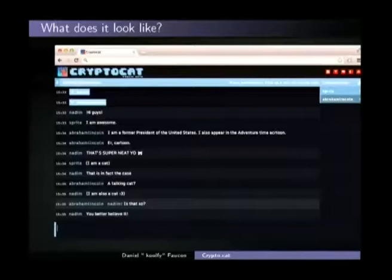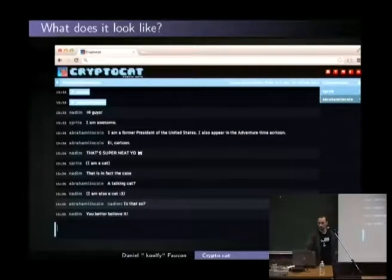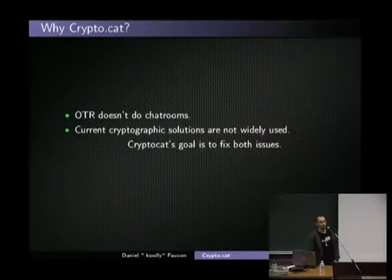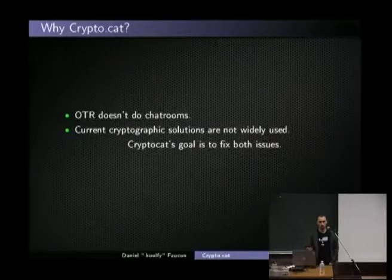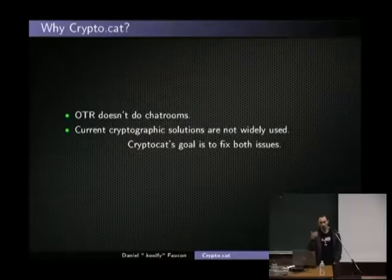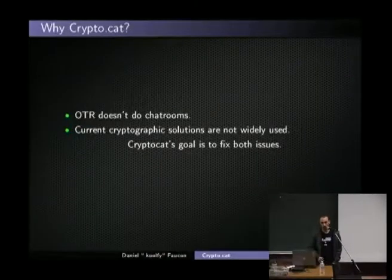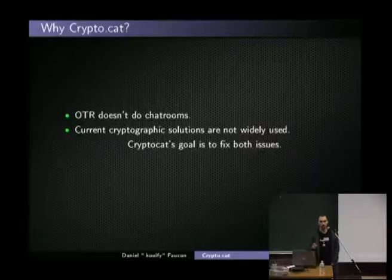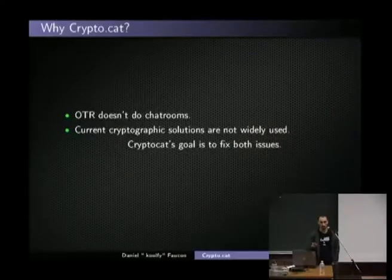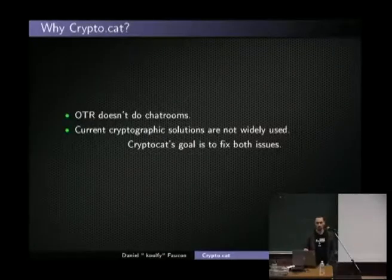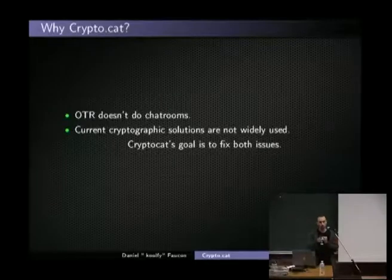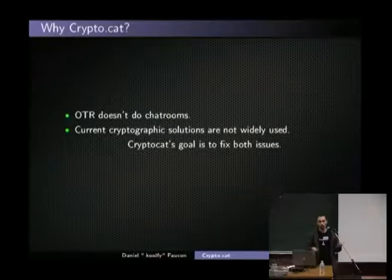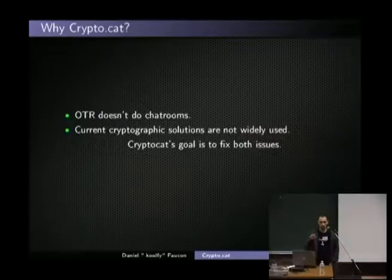So why do we need CryptoCat? Because right now we have OTR. OTR is great, it works perfectly. But OTR doesn't do chat rooms — OTR can only do one-on-one conversations. The use cases we are seeing nowadays is that communities need to have secure communications, not only a pair of individuals, but communities. We cannot ask everyone to have 15 windows open to talk with 15 other people and try to have a working organization like that. It's not realistic. We need to bring encryption to communities, not only to individuals.